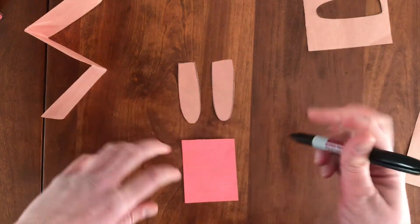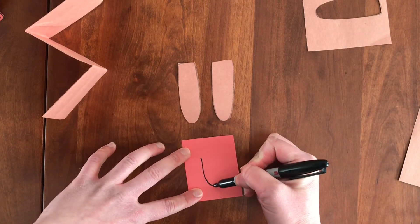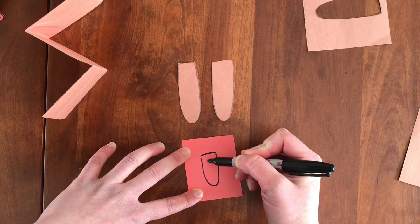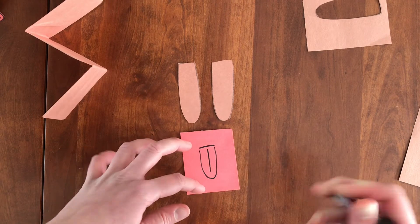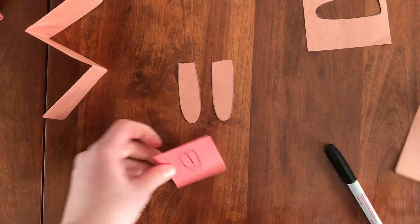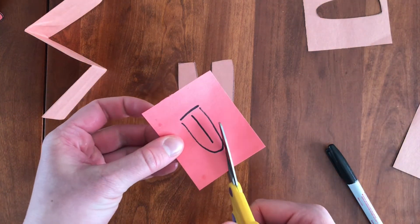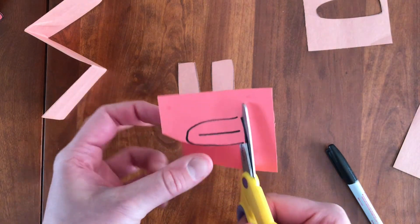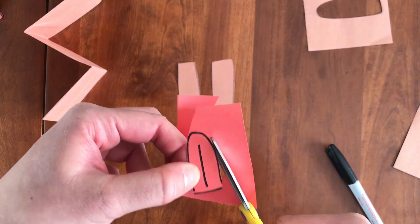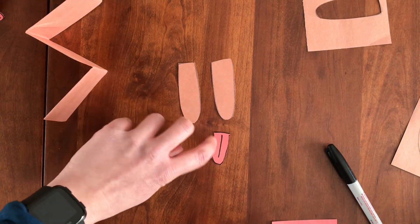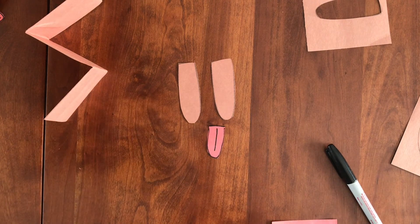So for the tongue, kind of like the ears, I'm going to do a long U shape and then close it at the top. And then I like to draw a little line in the middle so that it looks like a really cute tongue. So then you're going to go ahead and cut that out too. And there you have it. We've got two ears and a tongue for puppy.